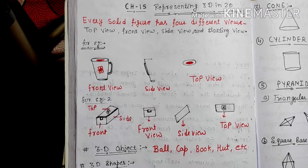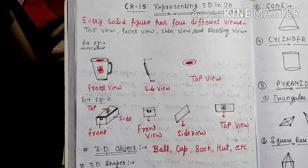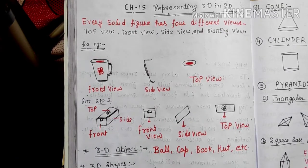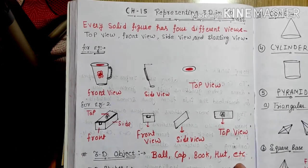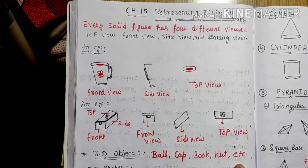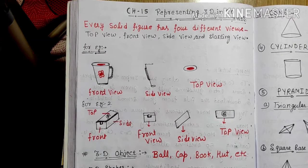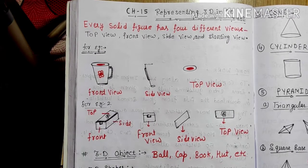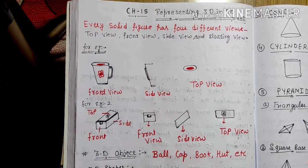Good afternoon everyone, I am Abhishek Nabde. Welcome to your Oggold Academy classes. So let us start with a new chapter — Chapter 15, which is Representing 3D in 2D. As we have already learnt about this chapter in class 7th, let us take a brief explanation again in class 8th.